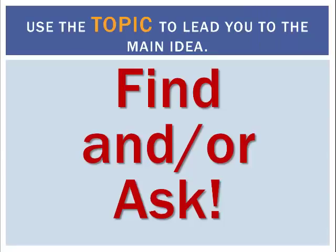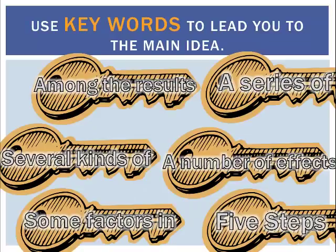So just remember, to help you find the main idea, you can use a topic to lead you there. You're going to want to ask who or what we're talking about. We can also look for keywords to lead us to the main idea. These are just some examples you can look for: among the results, a series of, several kinds of, a number of effects, some factors in, five steps. Remember, you could mix and match these.